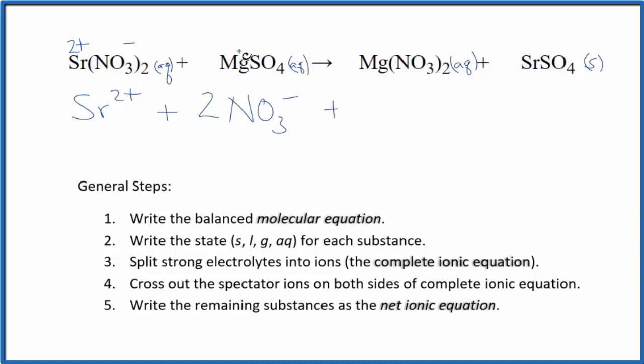Plus we have 2 nitrate ions. For magnesium sulfate, magnesium is also in group 2, so that'll be 2+. And the whole sulfate ion is always 2-. So we have Mg2+, and then we have the sulfate, SO4 2-. These are the reactants in our complete ionic equation.